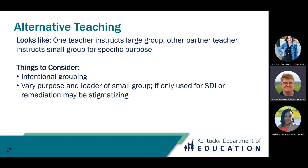For our last model of co-teaching, we have alternative teaching. This looks like one teacher instructing the large group while the other teacher instructs a small group for a specific purpose. You really have to consider intentional grouping, but in this model it's important to vary the purpose and leader of the small group. If that small pullout group is only used for specially designed instruction or remediation, it can be stigmatizing for students. For example, a large group could work on an extension activity while a small group is pre-taught vocabulary for an upcoming lesson, or a large group works on additional skill practice independently while the small group works on enrichment.